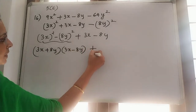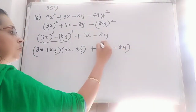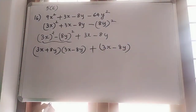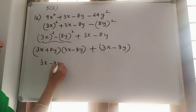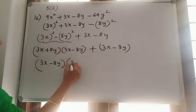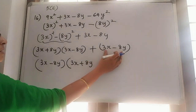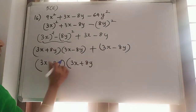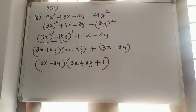Then this plus 3x minus 8y — put it in brackets. 3x minus 8y is common. So 3x minus 8y into balance 3x plus 8y, then plus 1 we want to write: 3x plus 8y plus 1. So that is our final answer.